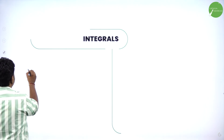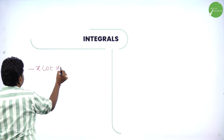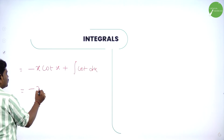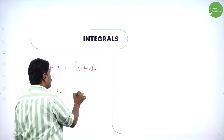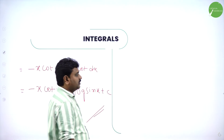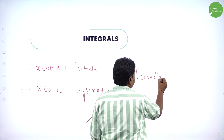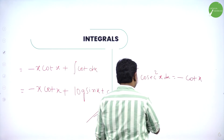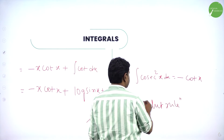Simplify: minus x·cot(x), and minus of minus becomes plus, so plus integration of cot(x) dx. Integration of cot(x) is log|sin(x)|. Final answer: minus x·cot(x) plus log|sin(x)| plus c. Formulas used: integration of cosec²(x) is minus cot(x), and we used parts — also called product rule.